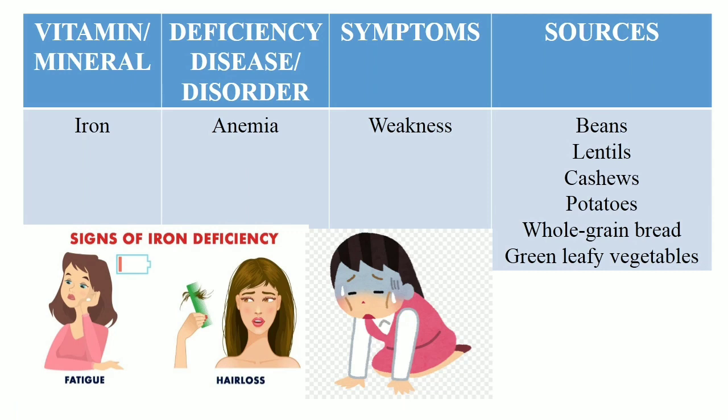Deficiency of iron causes lack of hemoglobin in the blood, which reduces the oxygen-carrying capacity of the blood, causing fatigue and weakness in the body, leading to a deficiency disease called anemia. Beans, lentils, cashews, potatoes, whole grain bread and green leafy vegetables are some good sources of iron.